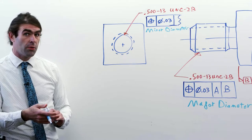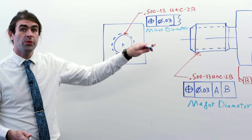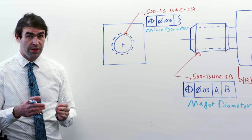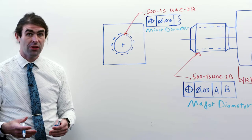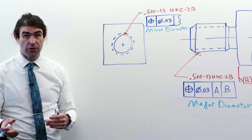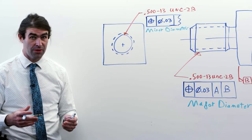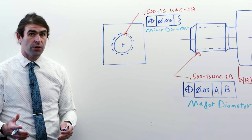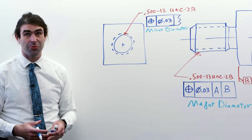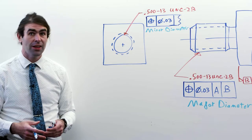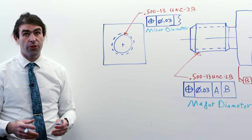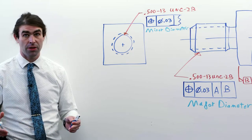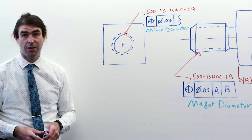There's also an argument about whether you should apply MMC to threads. Normally you shouldn't, because if the thread comes in small and you want to take advantage of that MMC, there's not that much difference between the largest and smallest a thread can come in — maybe a thousandth or two depending on the size. It's more difficult to find that out than to inspect a thread at RFS. I think it's fairly common to always call threads out at regardless of feature size. If your company uses MMC on threads, please let me know in the comments.